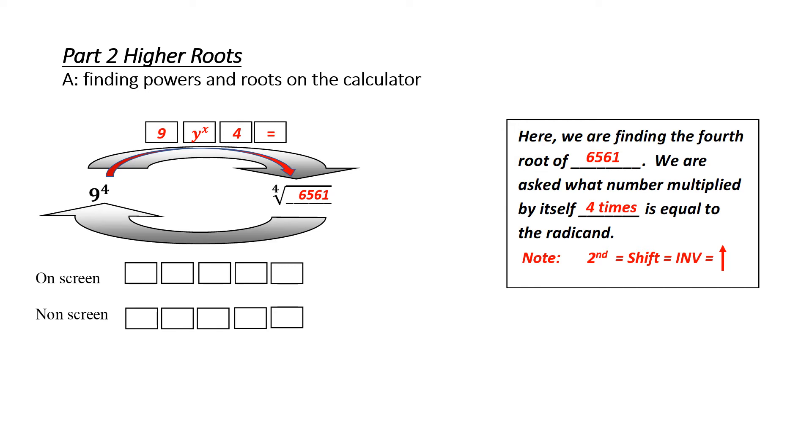You can tell whether you have an on-screen by punching in the square root of some number, and it will actually write the symbol out. If you have an on-screen, we're going to type this in as we see it. So the first thing we see is a 4, or the root index. Now we want to take the fourth root. So we want to do the opposite of a power or opposite of y to the x, which is second function y to the x. Now we want to state what number we're going to do this to, which was 6561, and equal sign. We should get back to 9. If you have a non-screen, which means it doesn't write it out except for just the numbers, then you have to reverse the numbers. You start by writing 6561. Then we still want to do the opposite of a power, which is second function y to the x. And finally, we want to put the power or the root index of 4 and equals. Both of these should take you back to 9.